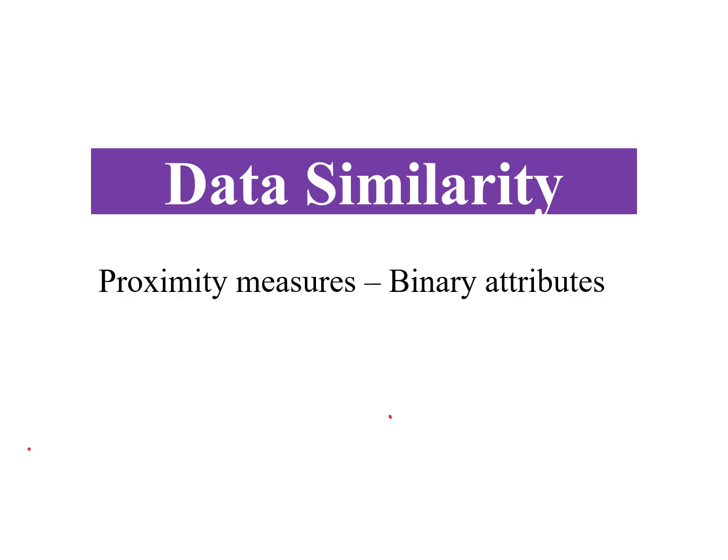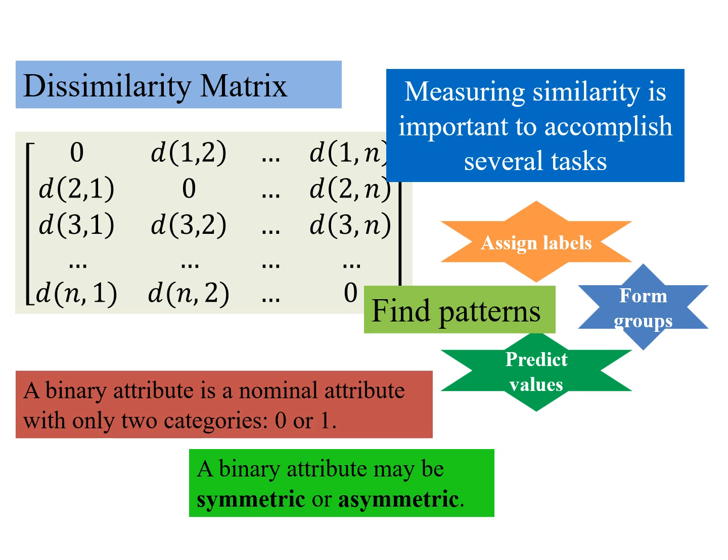Hello, proximity measures for binary attributes will now be discussed. Dissimilarity matrix, as we have seen earlier, gives us the values of distances between all pairs of objects stored in the data matrix. So we get an n cross n dissimilarity matrix. And why is measuring similarity important? Because we need to accomplish several tasks which this dissimilarity matrix would help in.